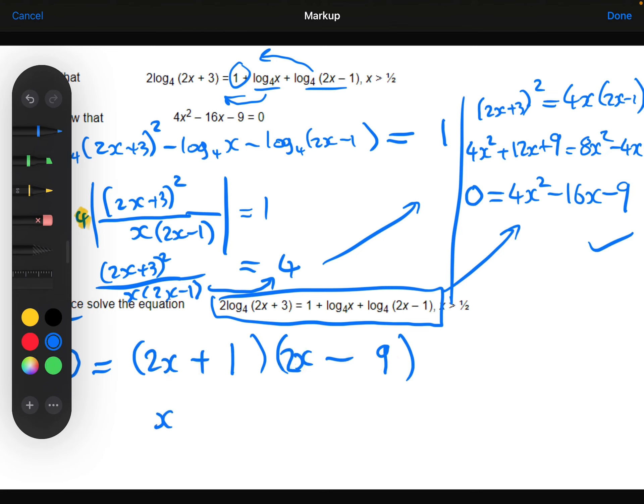Which means that x will either equal minus 1 half or 9 over 2. And then we should always double check with these questions to make sure they are both valid solutions. We know that because we can substitute them back into the original equation. This looks like it's going to cause a problem, the minus 1 half. I can't put that in here.